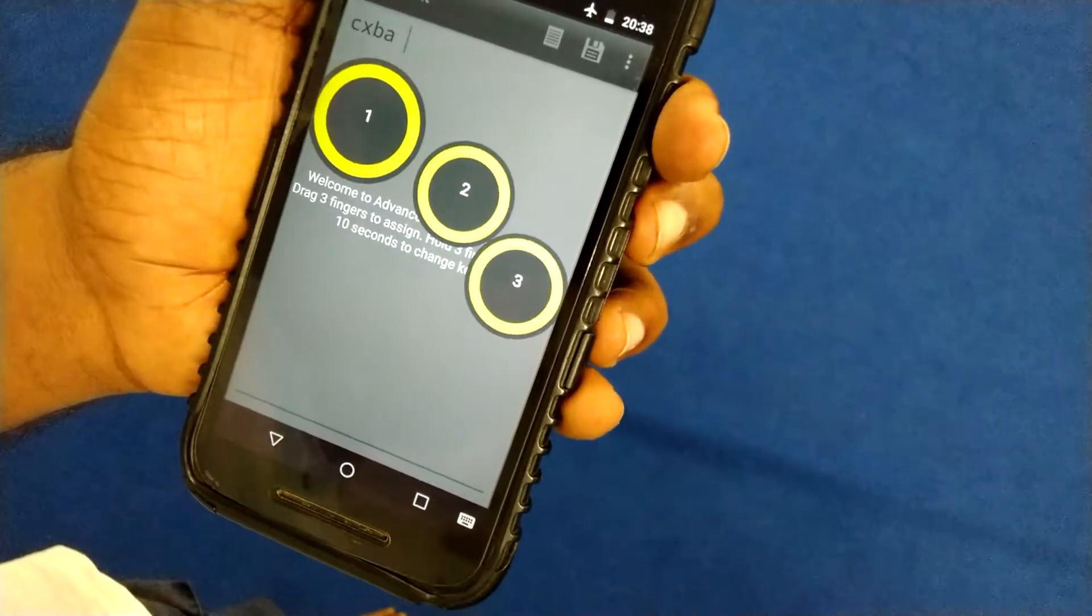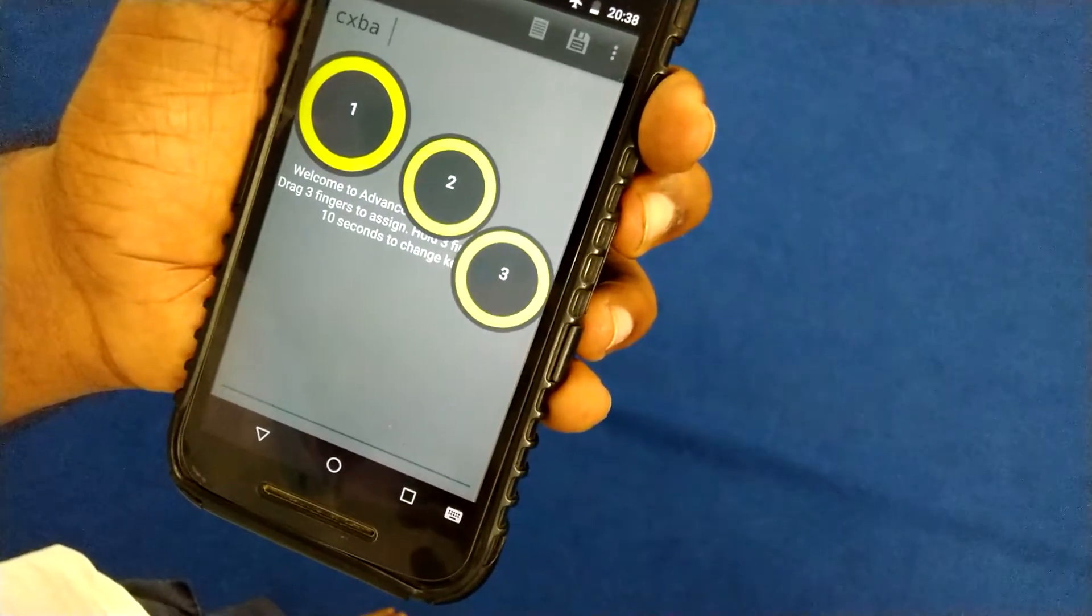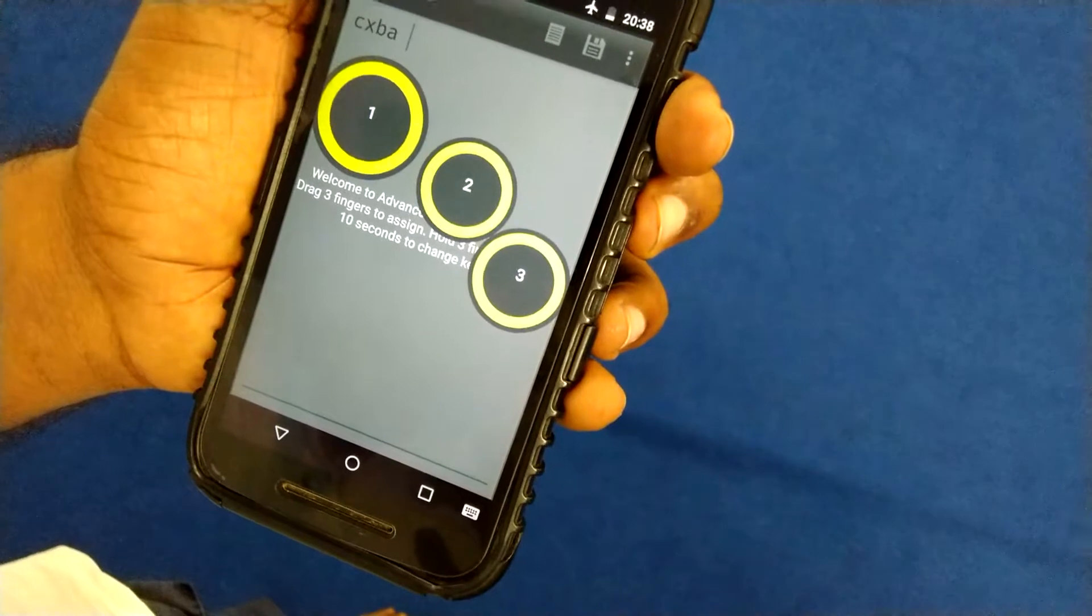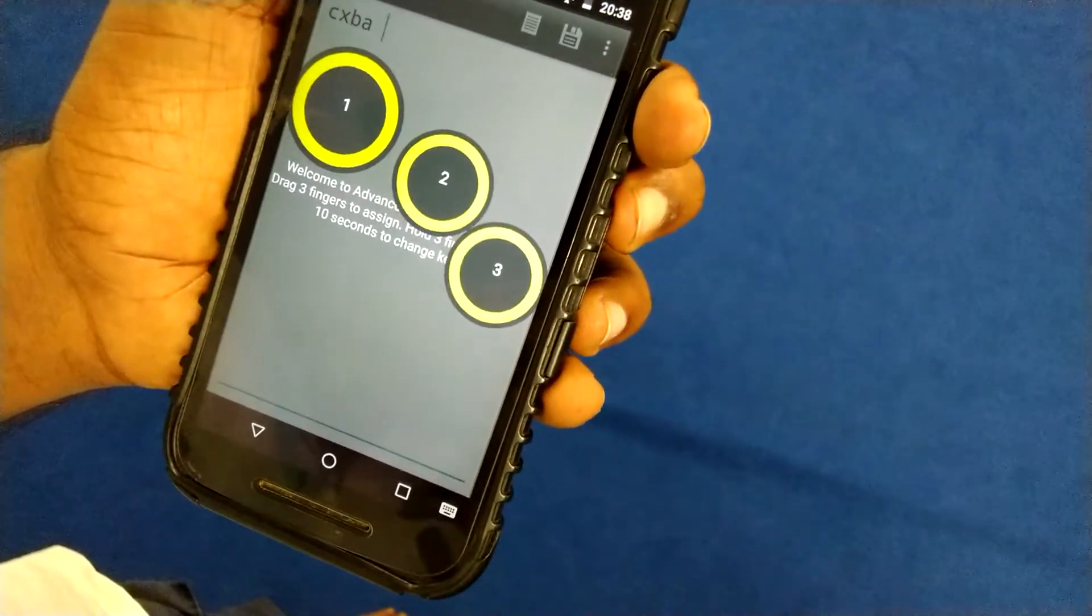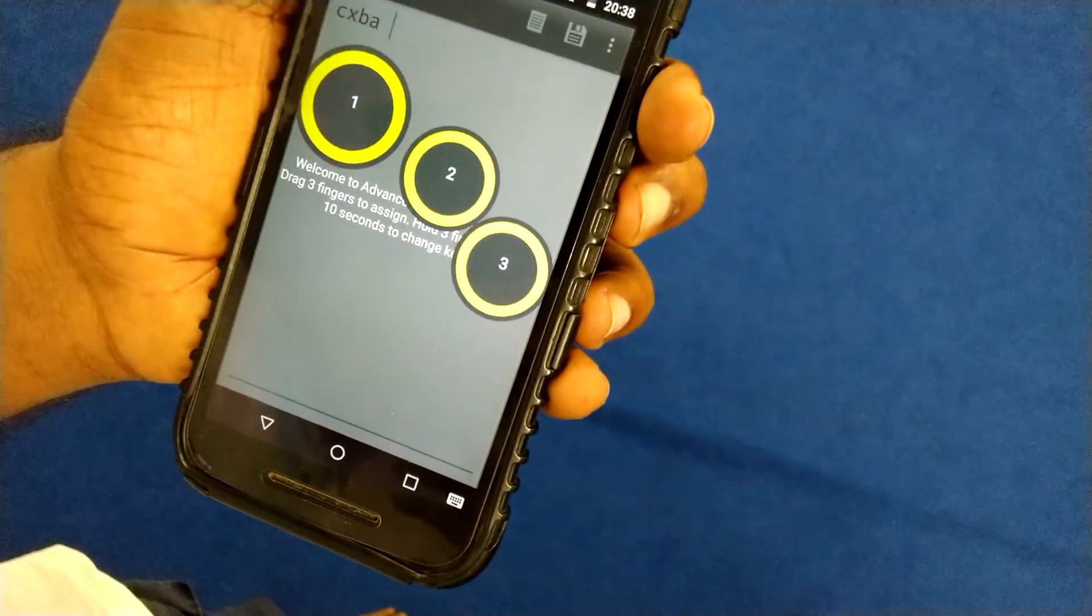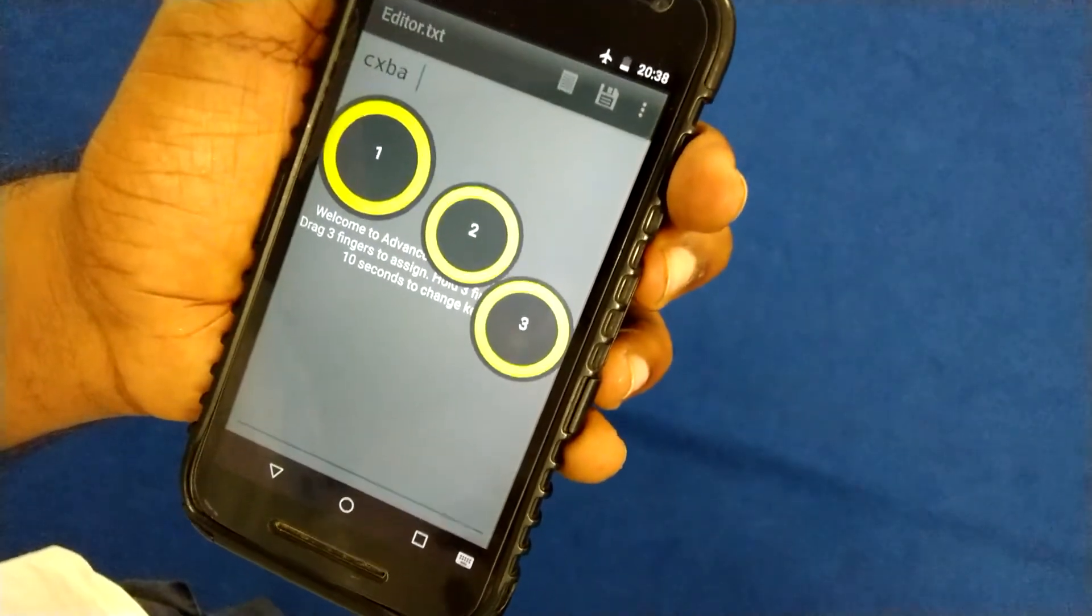Left will work as backspace. Two finger left swipe will pop up change keyboard dialog, and two finger right swipe will work as go, send, or search. Okay.